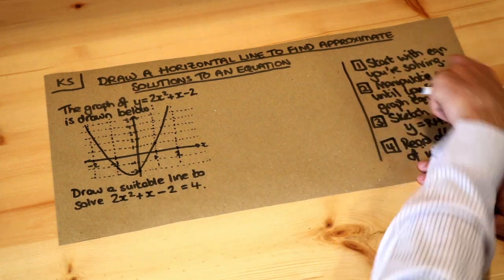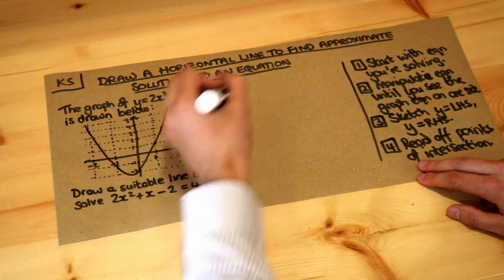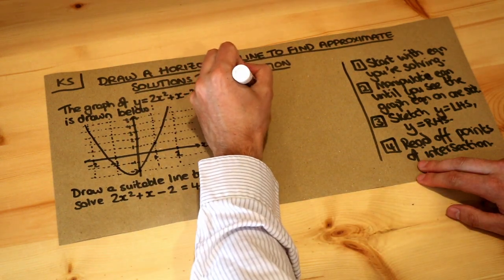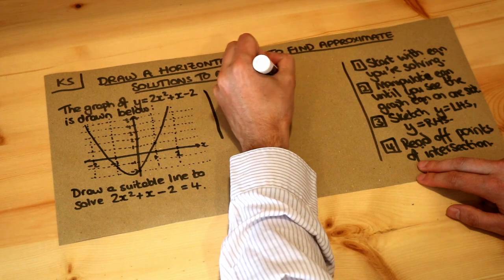Well let's start using step 1 with the equation we're solving. So we're starting with 2x squared plus x minus 2 equals 4.